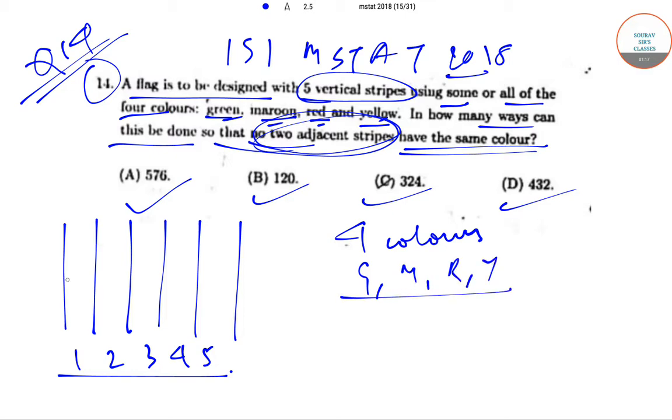Now the first stripe can be colored using any one of the four colors, so that can be done in four ways. Now the same color cannot be used for the adjacent stripe, which is stripe two. So there are three colors remaining. So the second stripe can be colored in three ways.